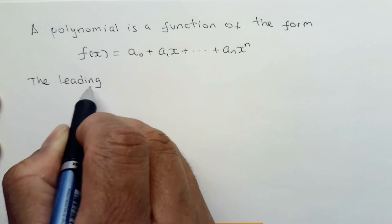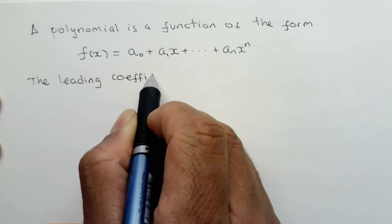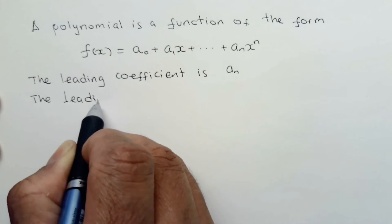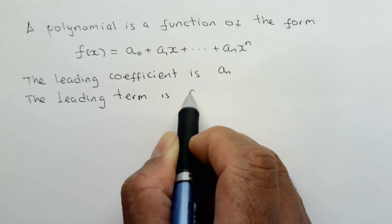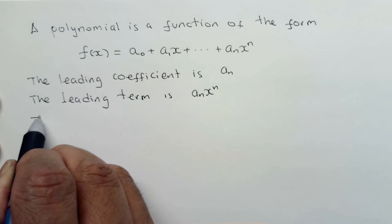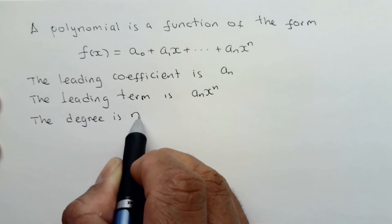The leading coefficient of the polynomial is the number a sub n. The leading term is a sub n times x to the n, and the degree of the polynomial is n.